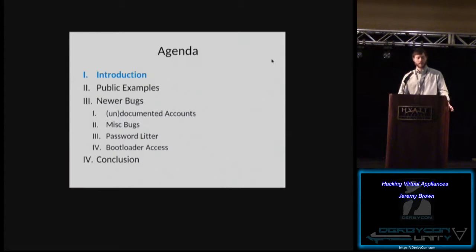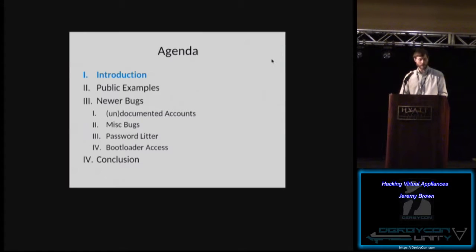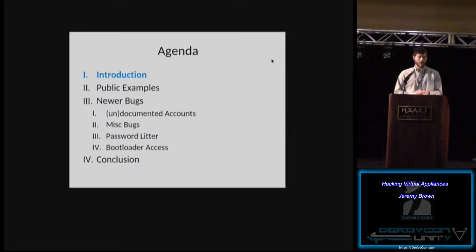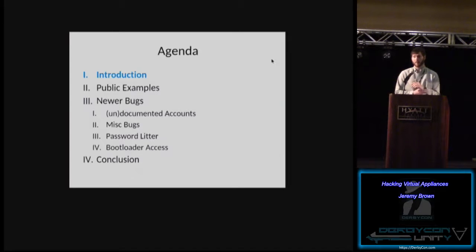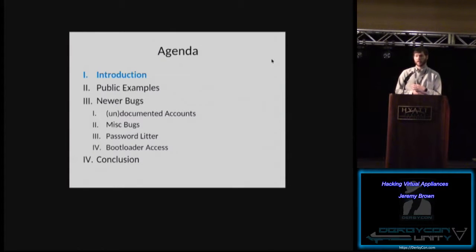Agenda-wise, we're going through the introduction a bit, going through some public examples. This presentation has a lot of bugs in it, and I'll show you some of the different analysis techniques. There are various security things throughout — a ton of bugs, some fixed, some not fixed. If you pay attention, you may find a few gems scattered throughout. Then I'll go into some newer bugs I've found through the last few months, covering various categories: documented accounts, undocumented accounts, and password litter. Then I'll show you where to go from here and how vendors can start fixing these.